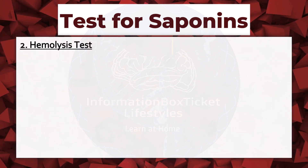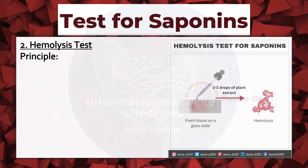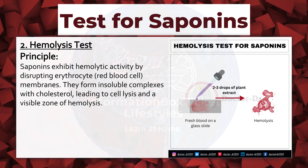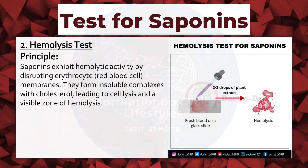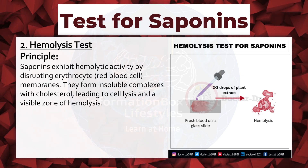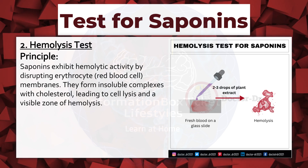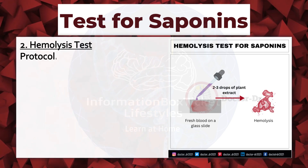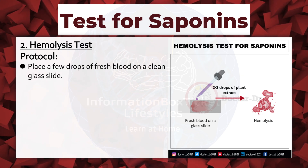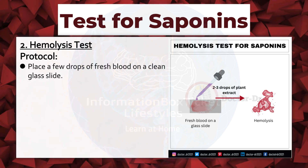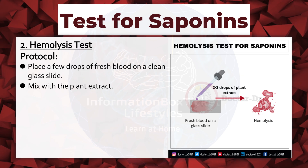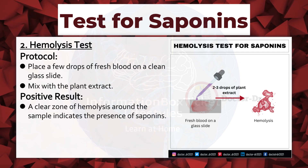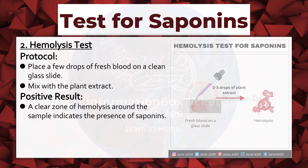Hemolysis Test. Principle: saponins exhibit hemolytic activity by disrupting erythrocyte (red blood cell) membranes. They form insoluble complexes with cholesterol, leading to cell lysis and a visible zone of hemolysis. Protocol: place a few drops of fresh blood on a clean glass slide and mix with the plant extract. Positive result: a clear zone of hemolysis around the sample indicates the presence of saponins.